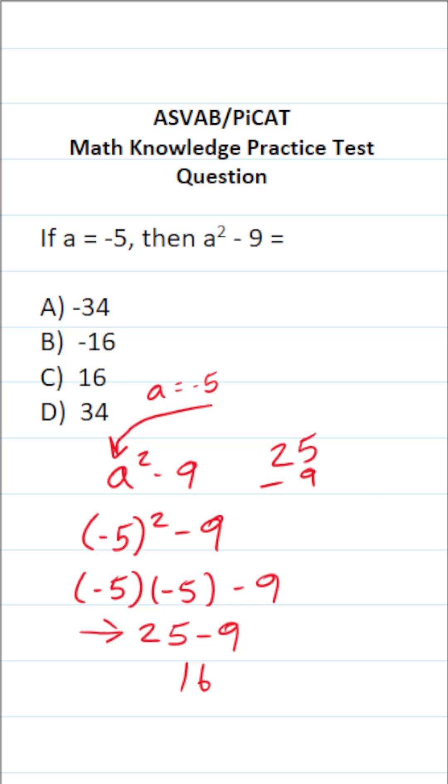We have 25 minus 9. We can't do 5 minus 9, we have to borrow. This becomes 1, this becomes 15. 15 minus 9 is 6. 1 minus nothing is 1. So that's how I got that 16. The answer to this one is C.